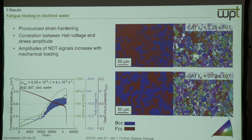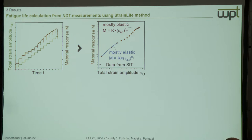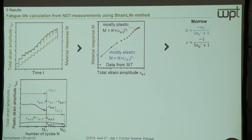One EBSD map clearly shows a dendrite that has been fully transformed into alpha-prime martensite. With the three tests shown, it is possible to do fatigue life calculation by means of a short-time evaluation procedure. For this we start plotting the total strain amplitude over time and the material response — either the mechanical value, i.e. stress amplitude, or the Hall voltage — and then plot that response over total strain amplitude divided into mostly elastic and mostly plastic parts to get the small n exponents.